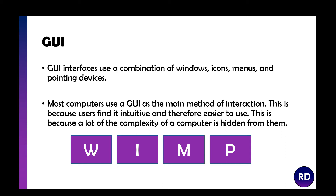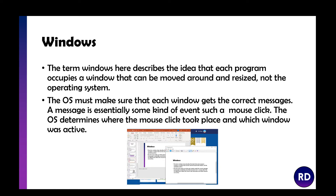You can identify a GUI if it's got windows, icons, menus or pointers. A window is a movable, resizable area inside the main display. The operating system provides the desktop and background, and windows are the things on top of that. The operating system needs to make sure that the correct window gets the correct messages and needs to understand which one is active and which one is not.